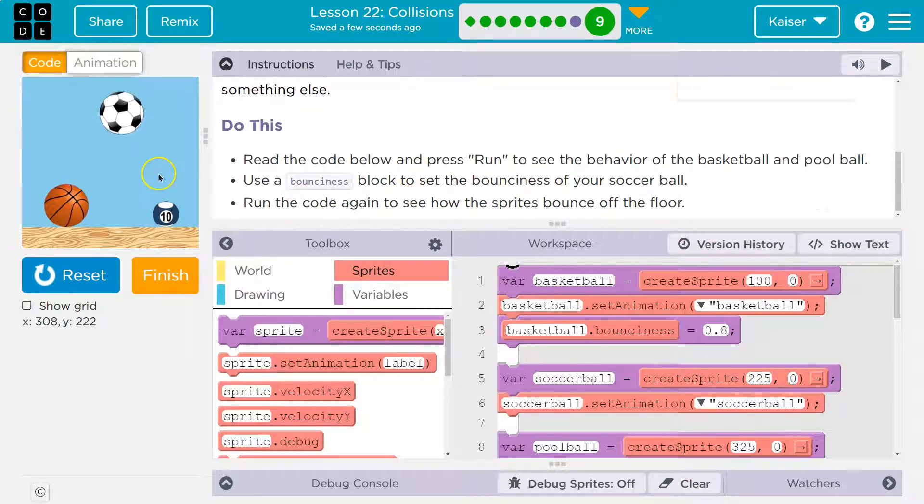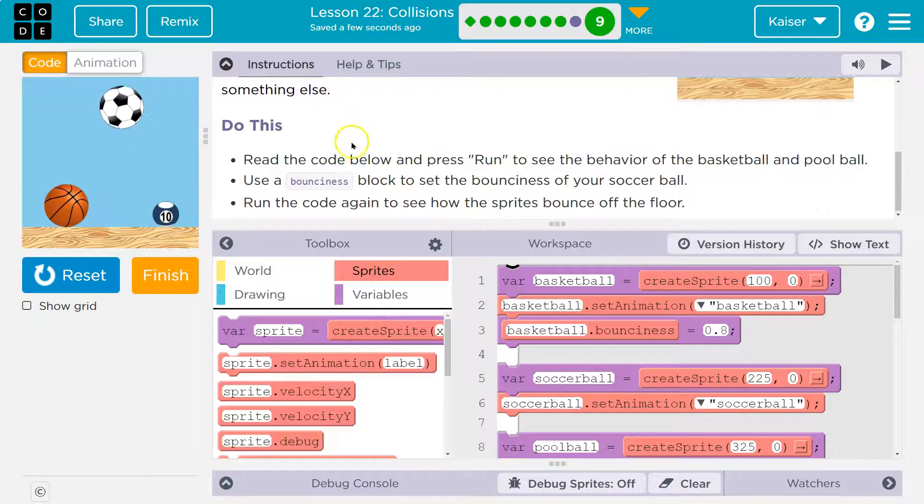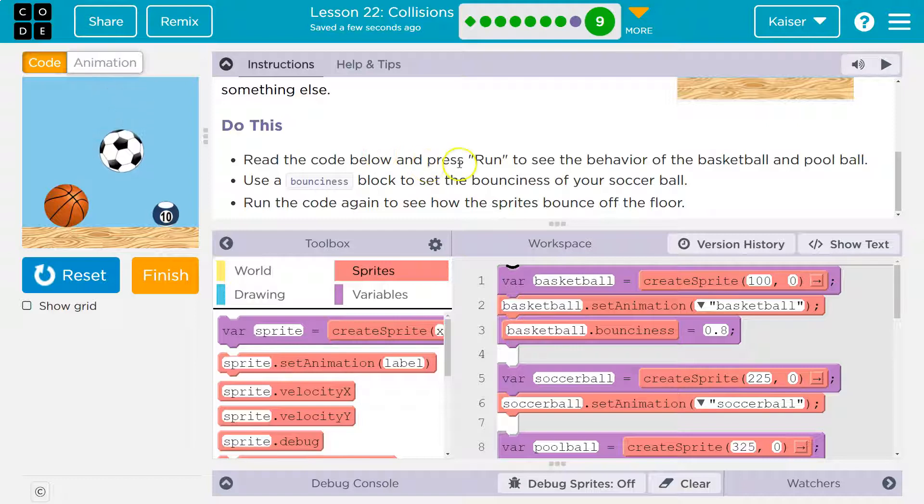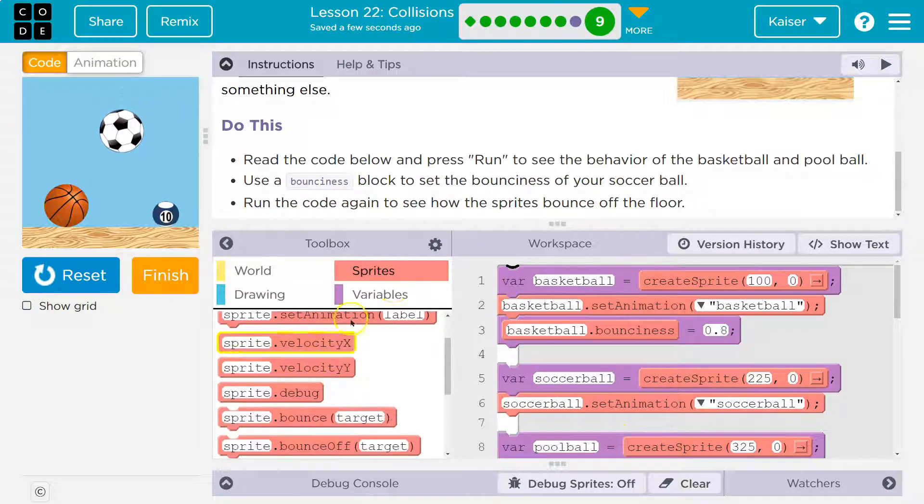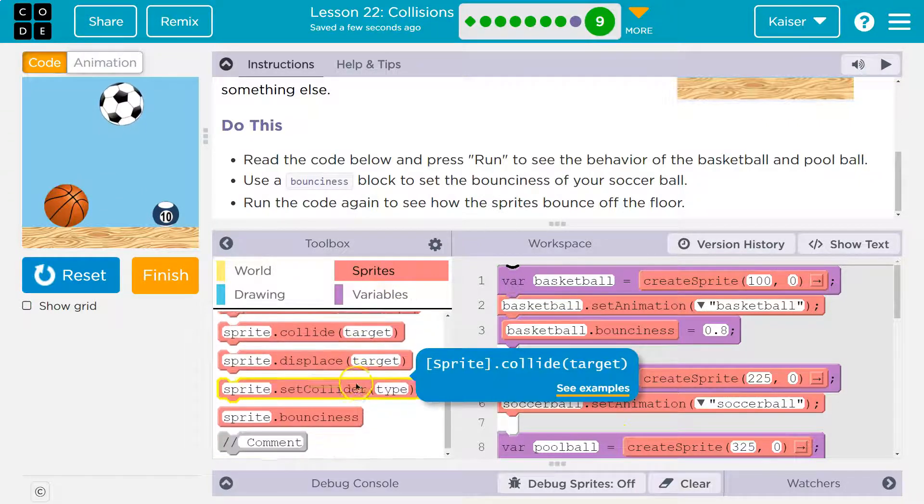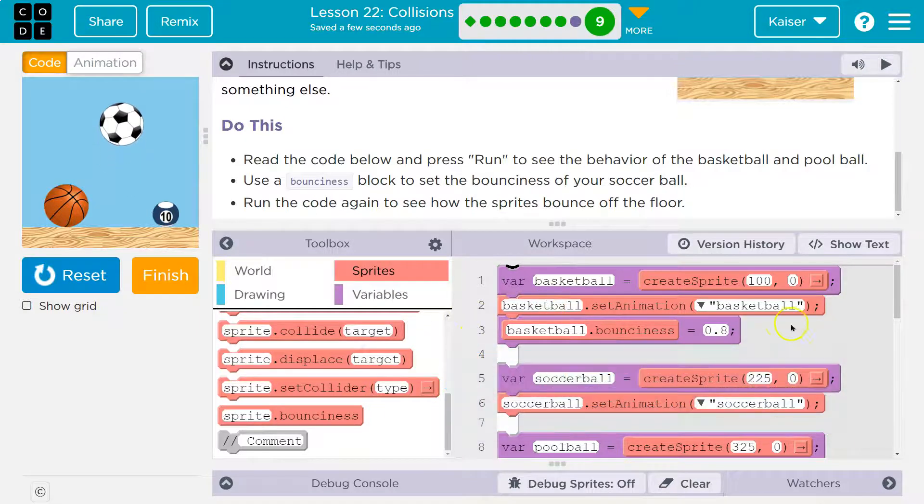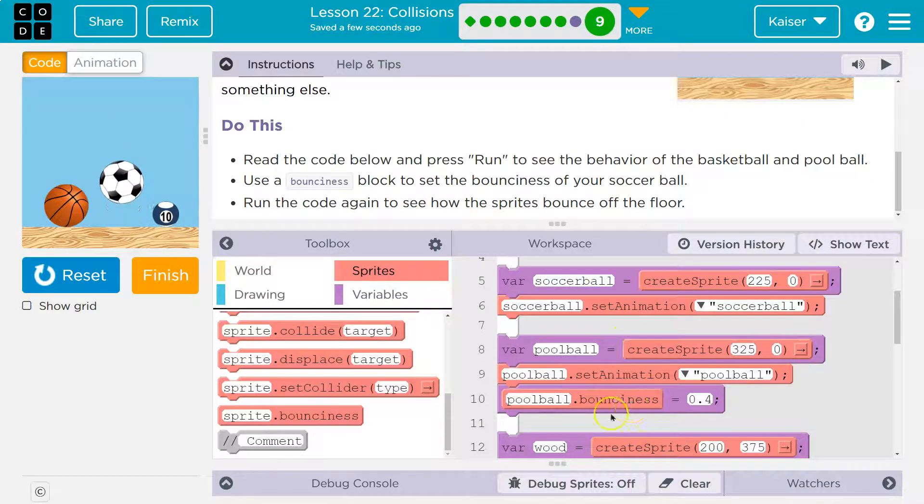That makes sense because usually gravity will slow it down. Do this: read the code below and press run, and see the behavior of the basketball and the pool ball. Use the bounciness block to set the bounciness of the soccer ball. The bounciness block is in Sprites. Notice that they're setting the bounciness property of the basketball and the pool ball up here towards the top of the code.